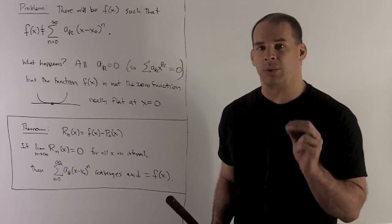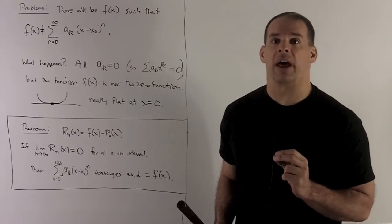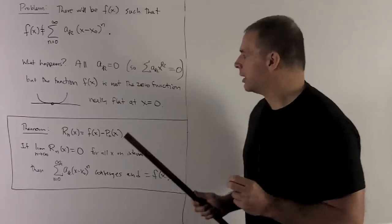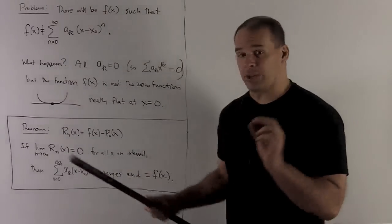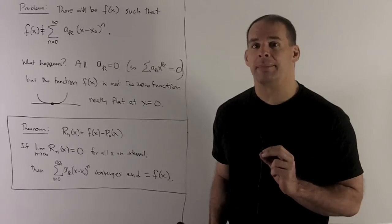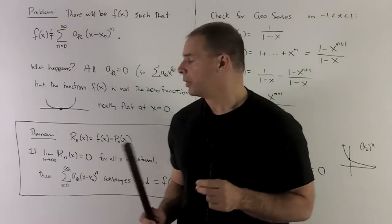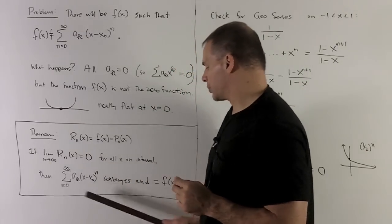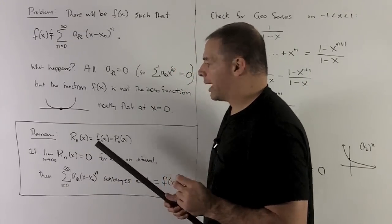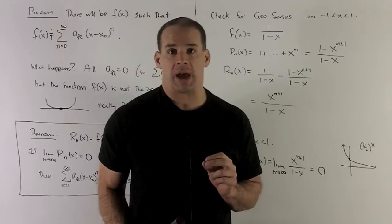thing is going to be it will be equal to the f of x that you started out with. So we have this happening, which is going to be for most of the functions we look at, things are going to be great. One more thing, rather than leave this as just some sort of abstract exercise, let's run our remainder theorem through a concrete example.